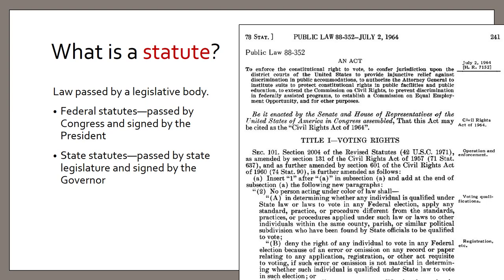Pictured here is a federal statute, the Civil Rights Act of 1964. Note that local governments can also pass laws that are like statutes, but they are generally called ordinances and they have their own unique publications and databases. We're not really going to cover them here.